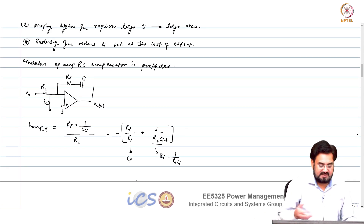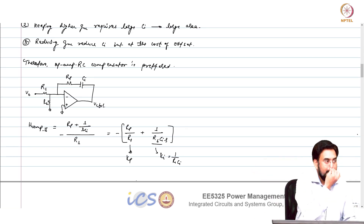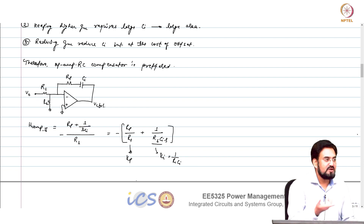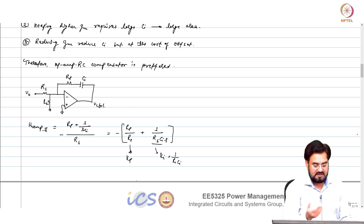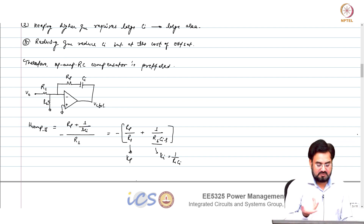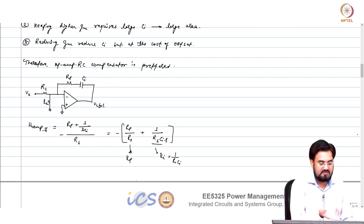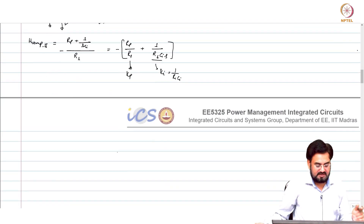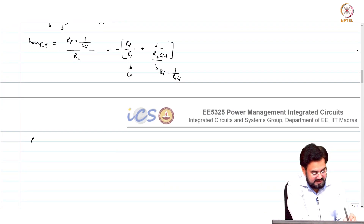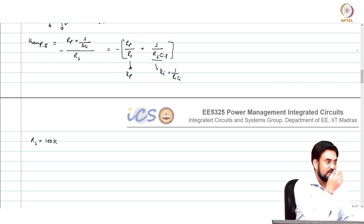What is the difference if you compare with the gm design? The only difference is R1 is replaced with 1 over gm, rest of the things remain the same. Which means we were considering gm = 1 milli, and here R1 is already there — we were considering 100k.